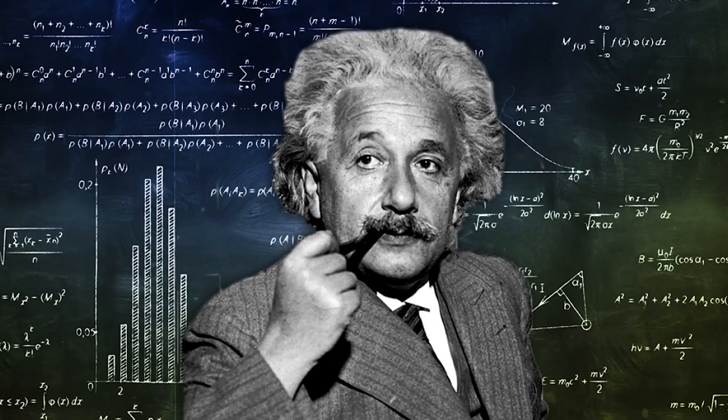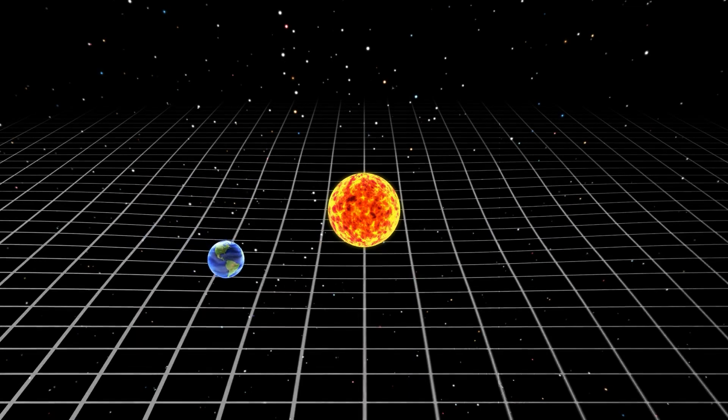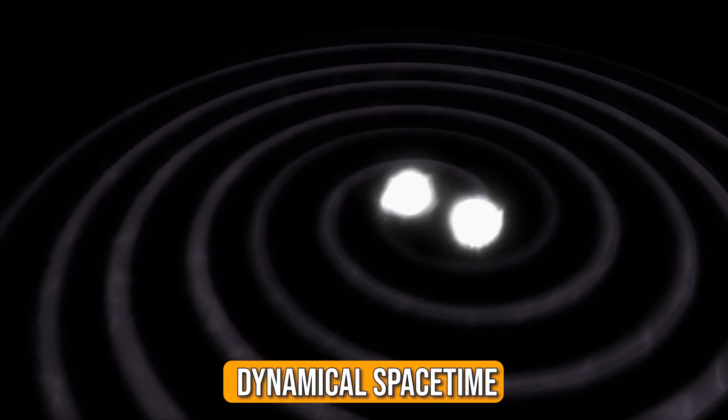Einstein showed that in this framework, gravity is no longer a force, but rather a distortion of an object's inertial path in a dynamical space-time.